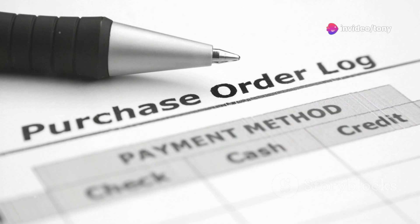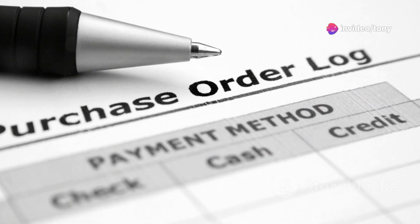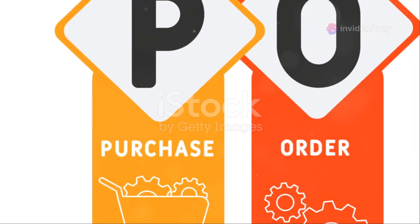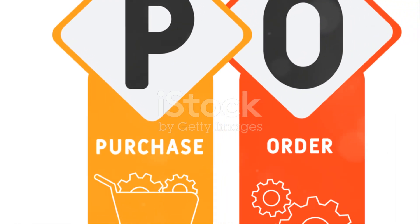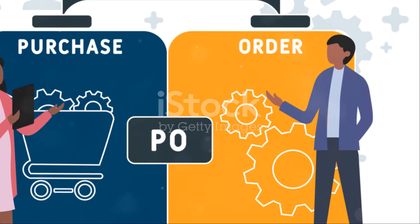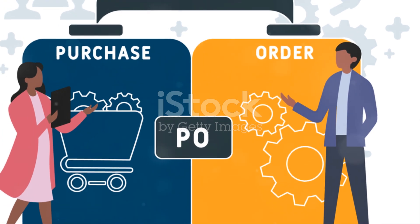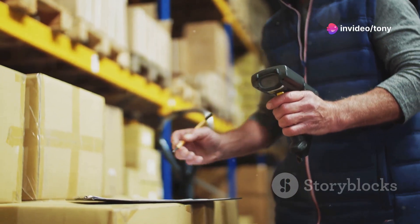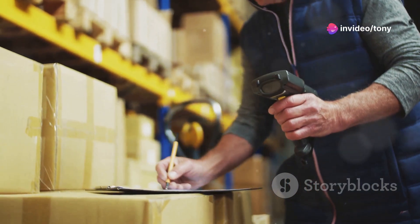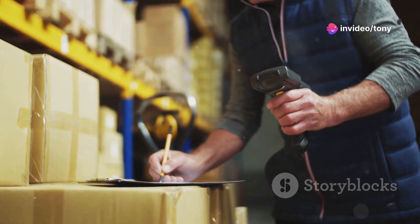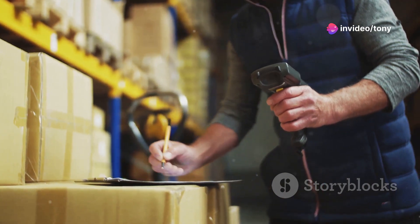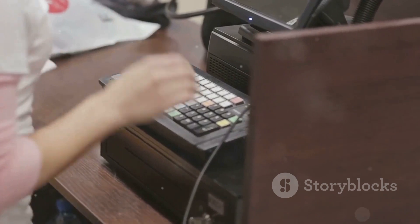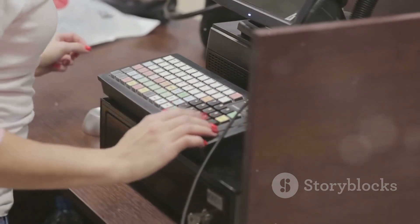Section 4: Purchase Order Processing — From Requisition to Receipt. Purchase Order, or PO, processing is a core functionality within SAP MM, representing a crucial aspect of procurement. It encompasses the entire process from the initial request for materials to the final receipt and invoice verification. The typical PO processing cycle in SAP MM involves several key steps.